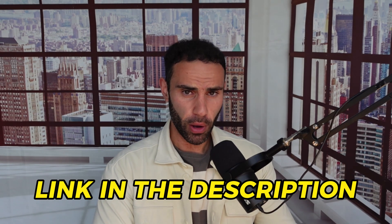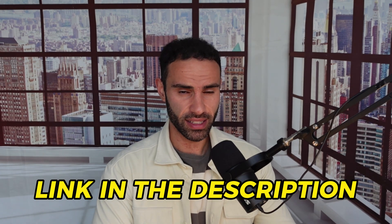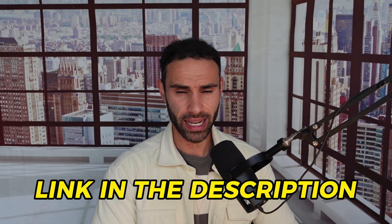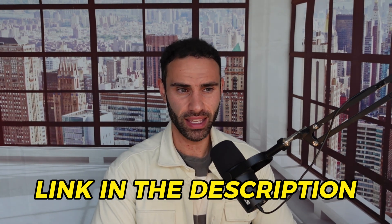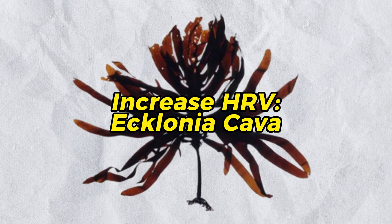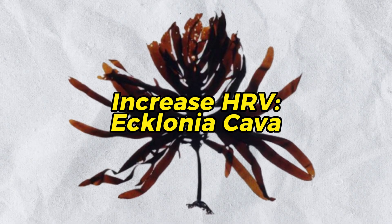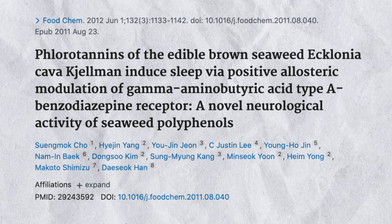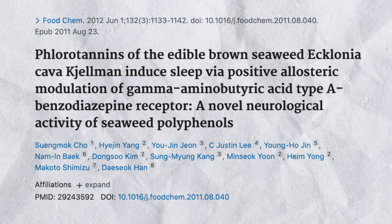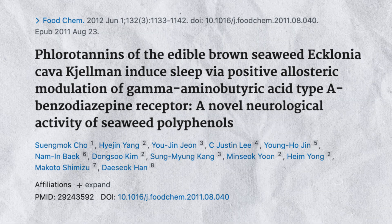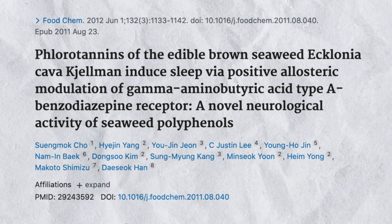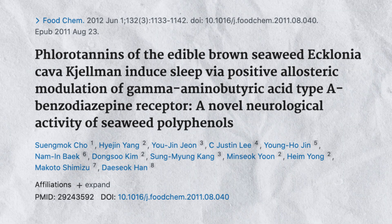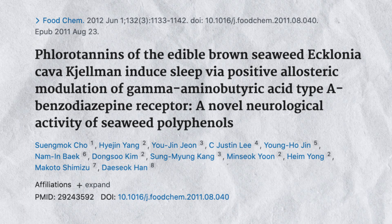The Pulsetto device is linked in the video description below if you want to check it out. Next up is the supplement Ecklonia cava — a brown algae seaweed that acts on the GABA-A benzodiazepine receptor. Taken in supplemental form, it can actually improve and increase your HRV.